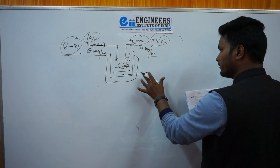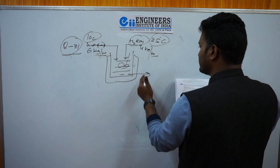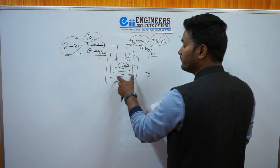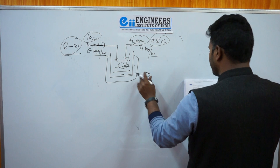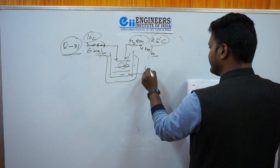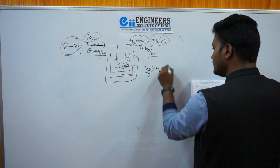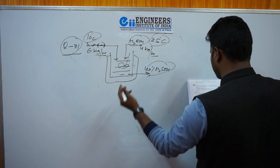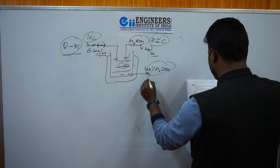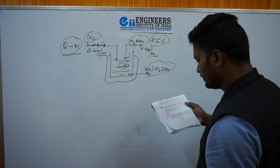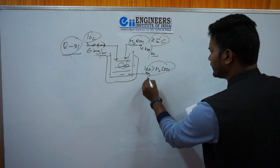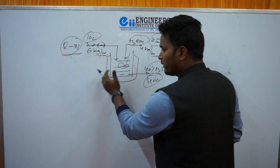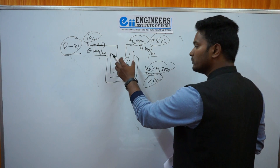The mixture coming out of the tank is a 40% H₂SO₄ solution, because the input is 6 kg water and 4 kg acid. The output stream has 40% H₂SO₄ solution at a temperature of 40°C. You have to find out how much heat must be removed in order to maintain the output temperature at 40°C.